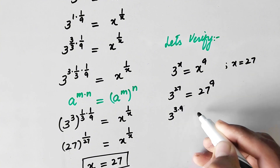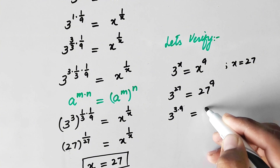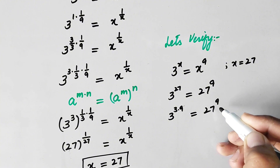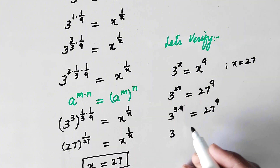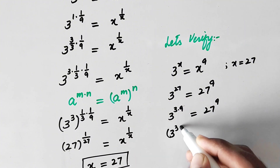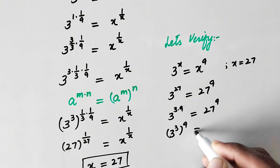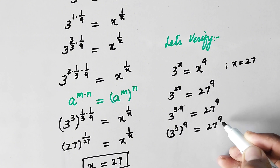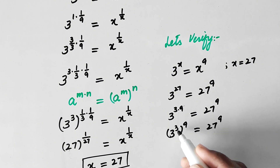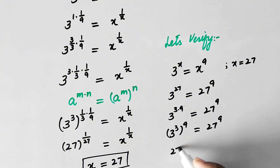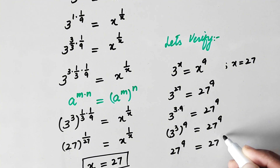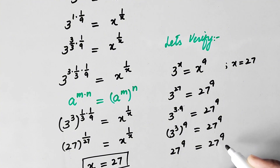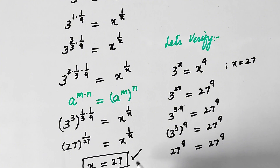We write 3 to the power 3 to the power 3 equals 27 to the power 9, and simplifying, 3 to the power 3 equals 27 to the power 9. The left hand side equals the right hand side, which verifies that x equals 27 is the correct answer.